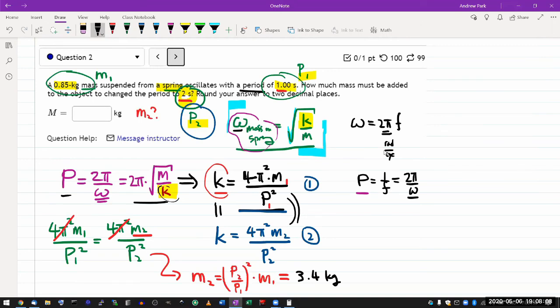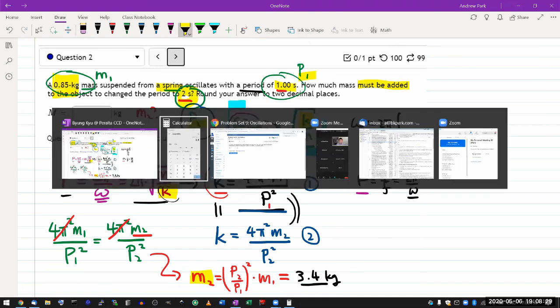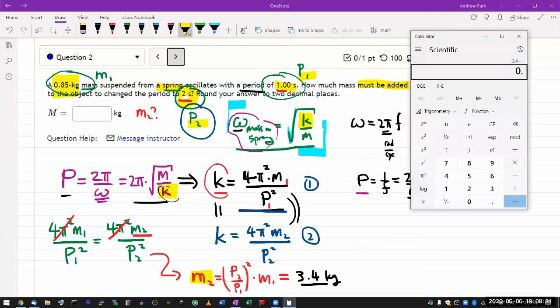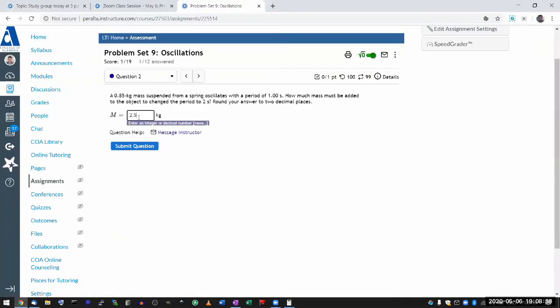Now 3.4 kilograms is not the answer because it's asking how much mass must be added. This m2 is the total mass for the period too. So I have to subtract out the mass that's already there because the question is asking you for how much mass you have to add. So let me just subtract 0.85. So 2.55. That should be the correct answer. Let's check 2.55.